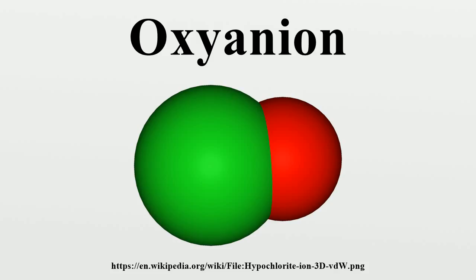In a similar way, the oxyanion of chlorine has the formula ClO2^-, and is bent with two lone pairs and two bonding pairs. In the third and subsequent rows of the periodic table, six coordination is possible, but isolated octahedral oxoanions are not known because they would carry too high an electrical charge.